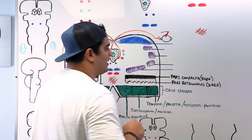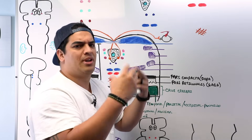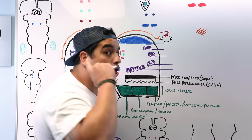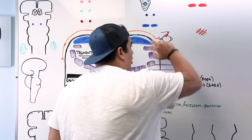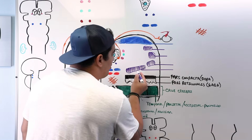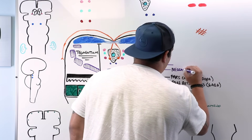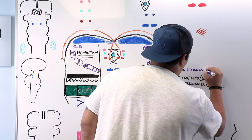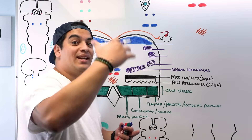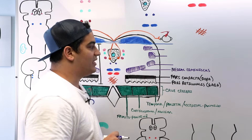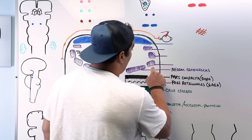Now the ascending sensory pathways — carrying fine touch, discriminative touch, pressure, proprioception, pain, temperature, and auditory sensations — run through purple fibers here. Starting medially and working laterally: just behind the substantia nigra is the medial lemniscus, which is the sensory pathway for proprioception, fine and discriminative touch, and vibratory sensations.